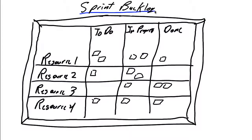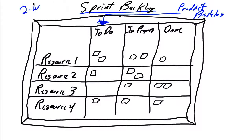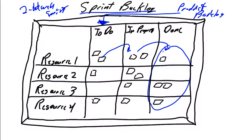During the sprint planning process, stories are removed from the product backlog based on the highest priority and moved over to the to-do column of the sprint backlog, where the sprint identifies the stories to be worked on in the next two to four week sprint. I like to have my sprint backlog identified with the resources as well. Just like we moved stories through the product backlog, we move stories through the sprint backlog — they start in to-do, move to in-progress, and then to done, so that by the end of the sprint all stories are in the done column.